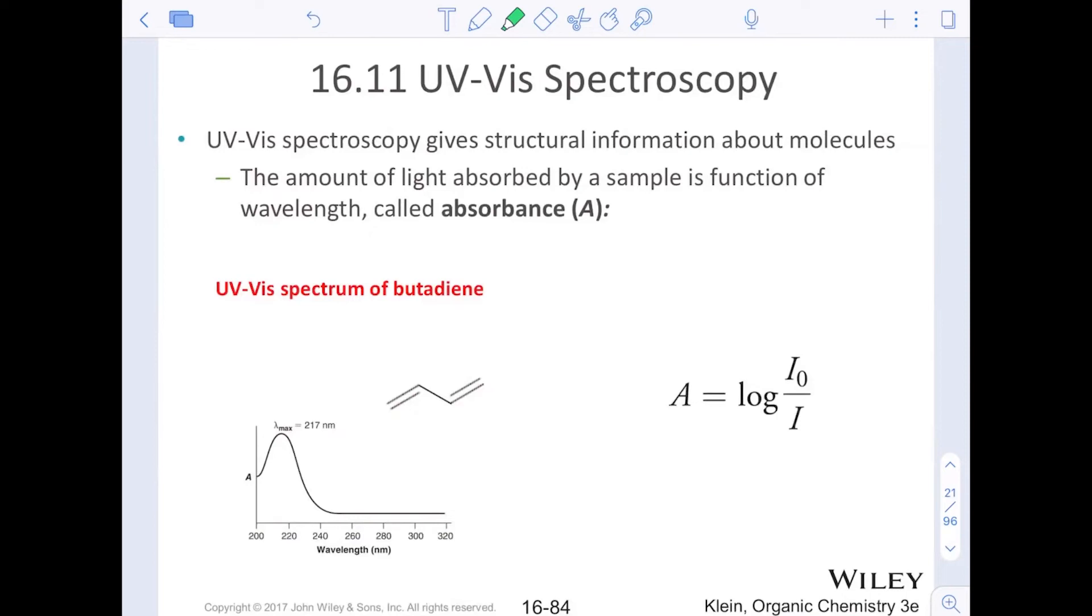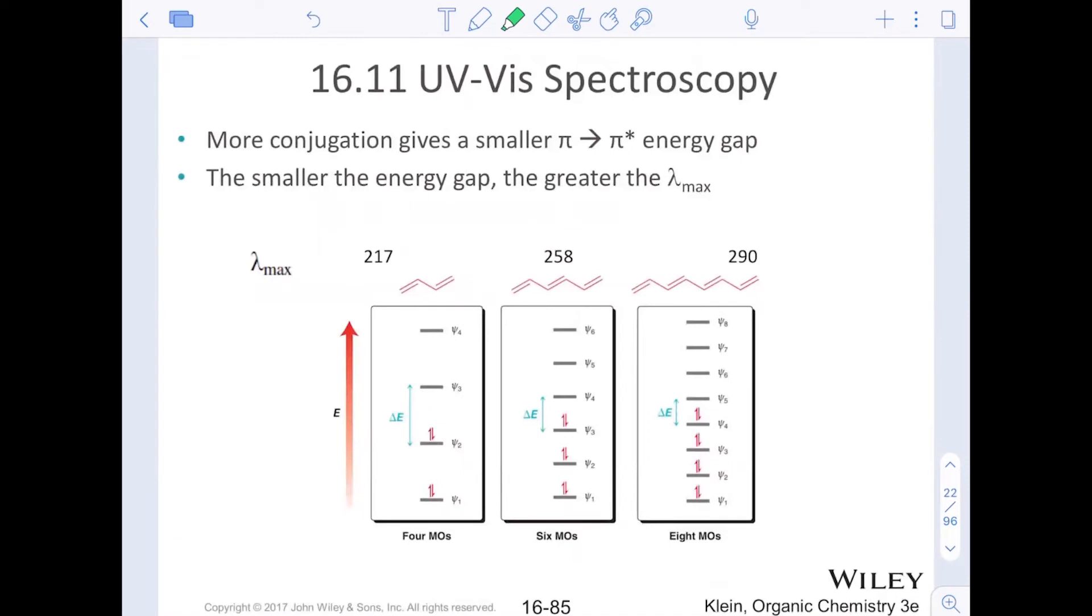Now, the only thing is that the more conjugated the system, the smaller the gap between the HOMO and the LUMO, the pi and the pi star. So the smaller the energy gap, the greater the wavelength. And so we can start to see two systems, two pi bonds. Conjugated usually absorbs energy around a lambda, a wavelength of 217 nanometers. The longer our conjugated system, the higher the wavelength because the energy gap is getting smaller. Remember, energy is equal to Hc over lambda. As lambda increases, energy decreases. It's inversely proportional.